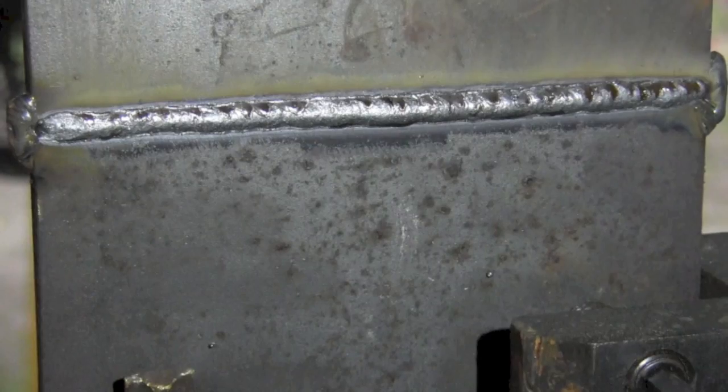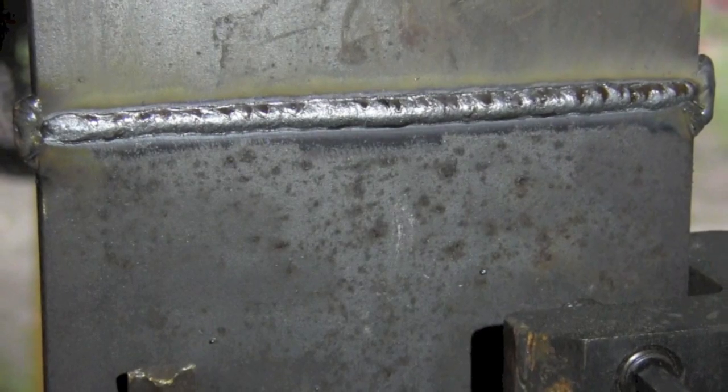But if you can stay right on that front of the puddle, you'll get a good looking root pass, one that penetrates through, pushes through, and completely consumes the shoulders.